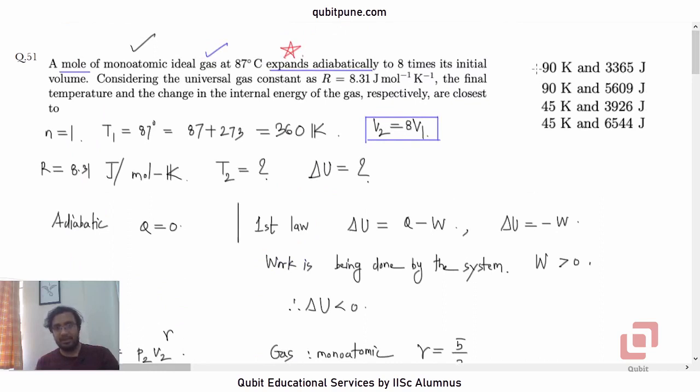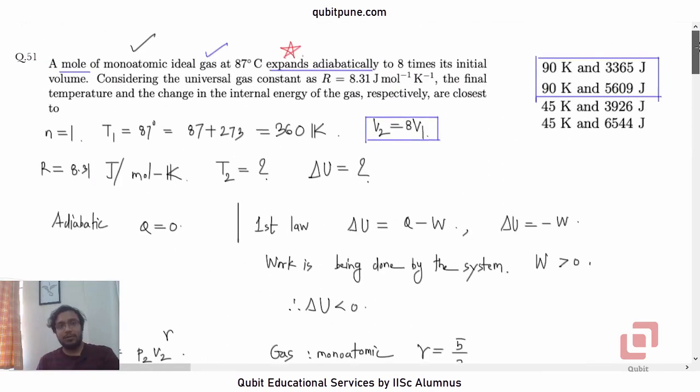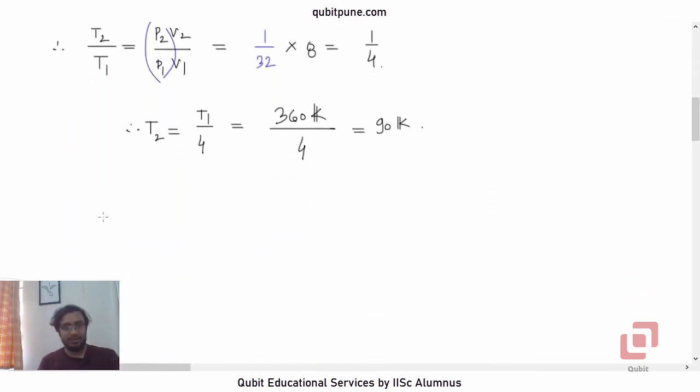Now how are we going to determine the change in internal energy delta U? We know that the gas is monoatomic and only one mole of the gas is present. Using these two facts, we can say delta U = (3/2)R(delta T). You can refer to the results of kinetic theory for this formula.